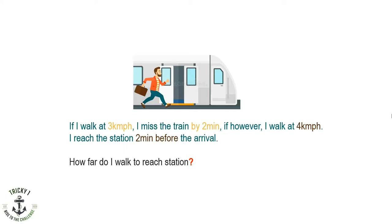If I walk at 3 km per hour, I miss the train by 2 minutes. If, however, I walk at 4 km per hour, I reach the station 2 minutes before the arrival. So how far do I walk to reach the station?